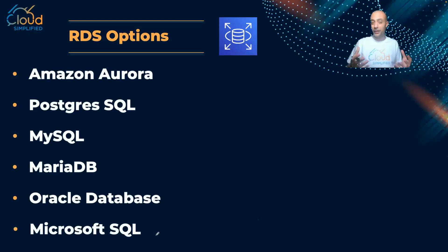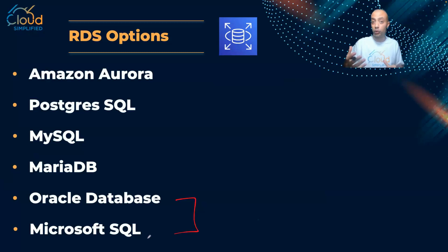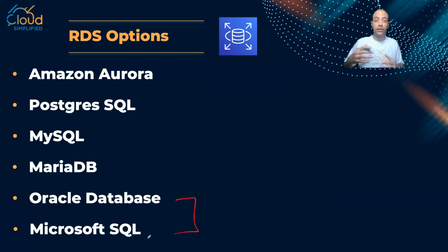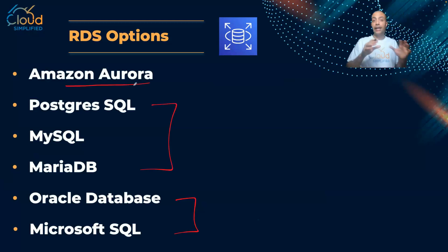If you have a background in databases, you'll recognize Oracle and Microsoft SQL Server — these are enterprise-grade databases offering the fastest performance, but they are very expensive. Some organizations may sacrifice performance to reduce cost and choose open-source databases like PostgreSQL, MySQL, and MariaDB.